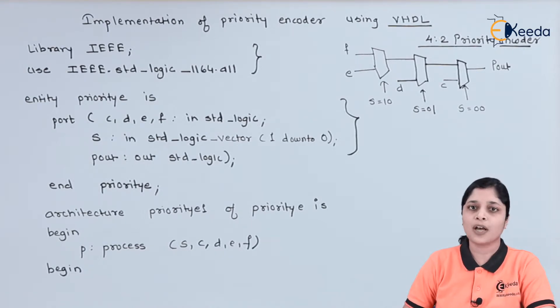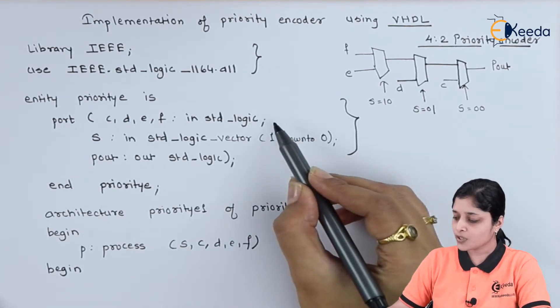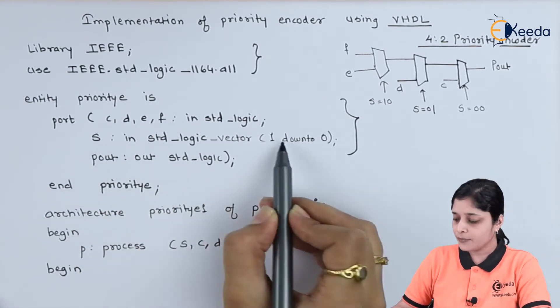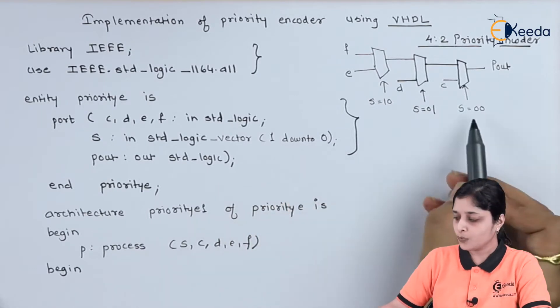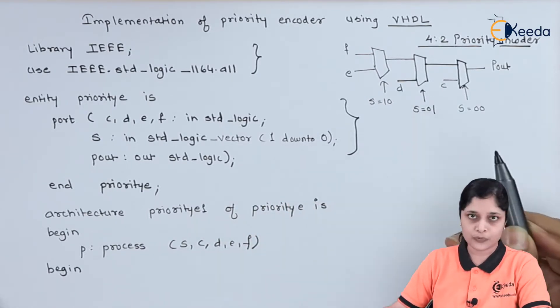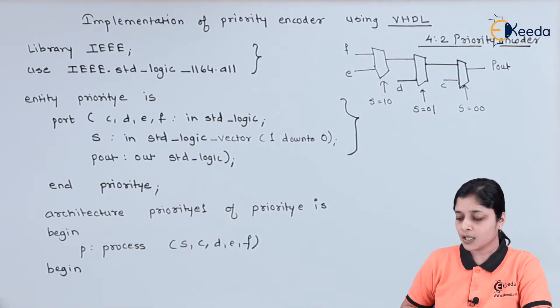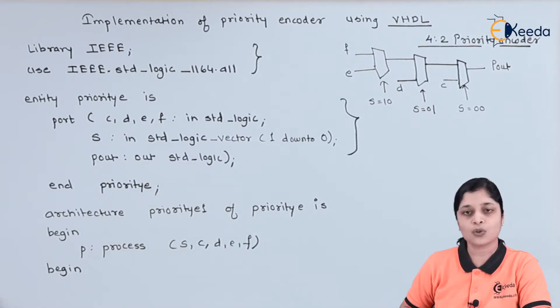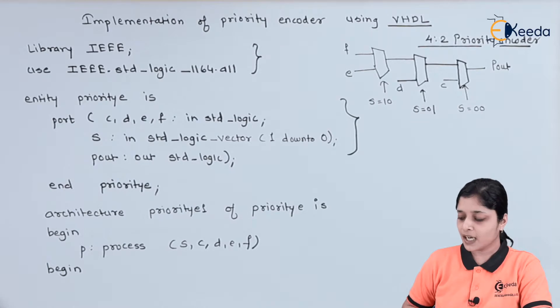Inside the entity, you have to declare input ports and output ports. We have mentioned here input ports that is C, D, E, F according to the diagram. S we have to take a vector that is 1 down to 0 for 00, 01, 10, and 11. We have to show the output terminal that is Pout by defining out std_logic. Now you have to define the architecture.